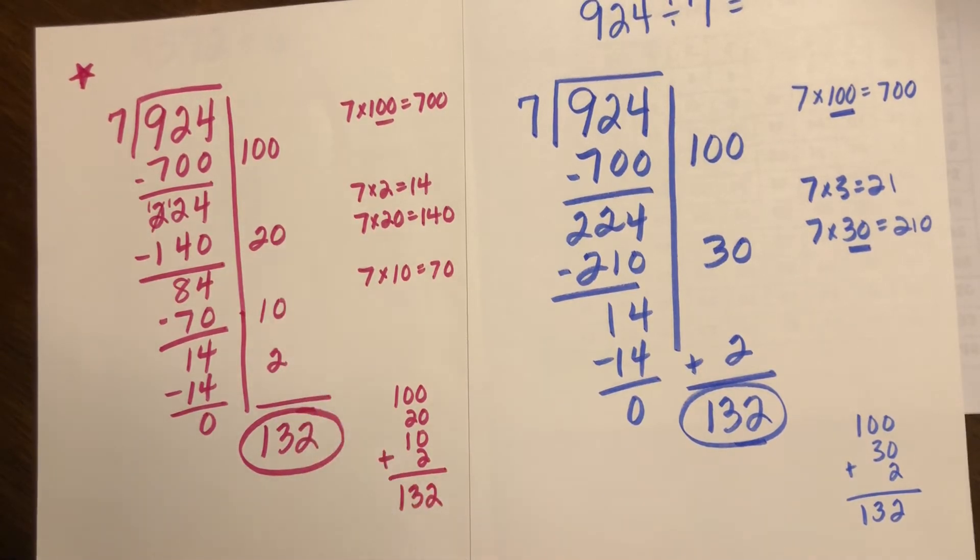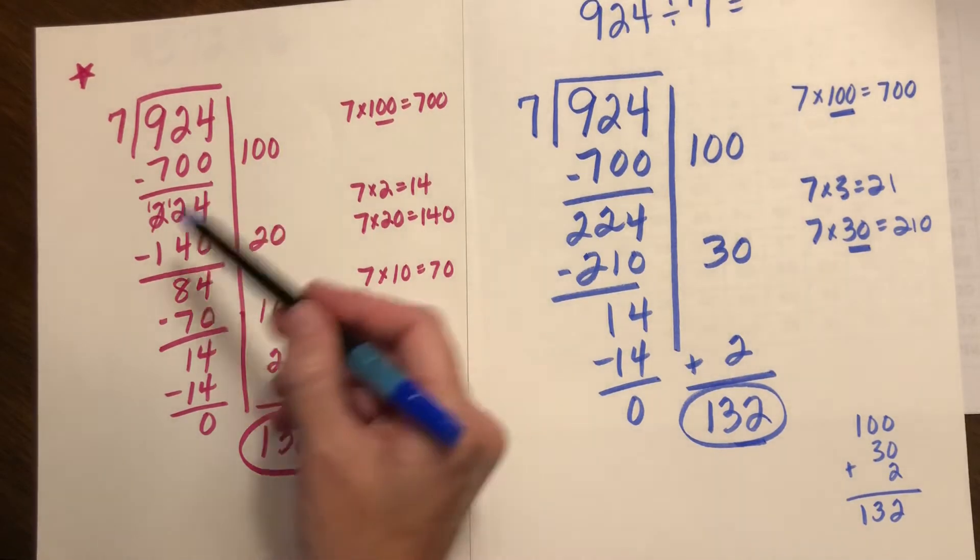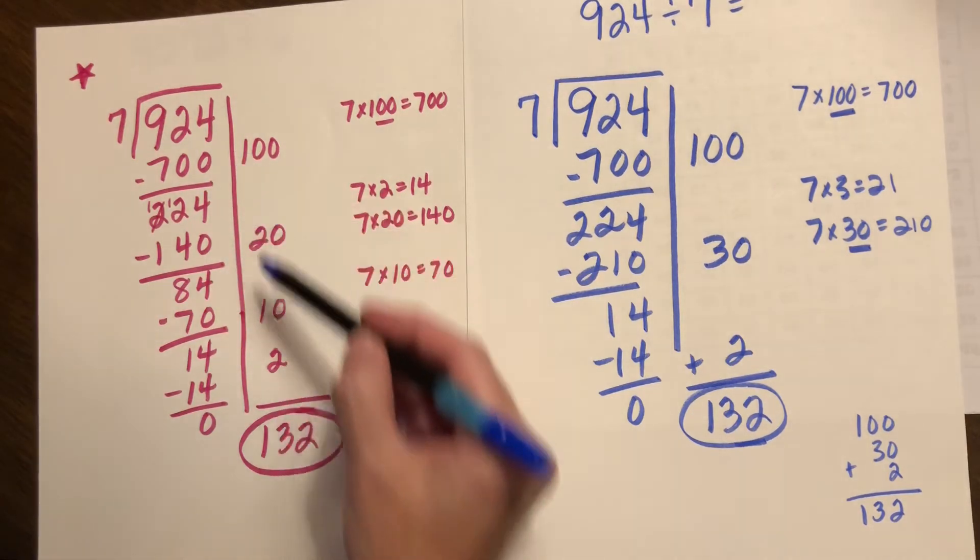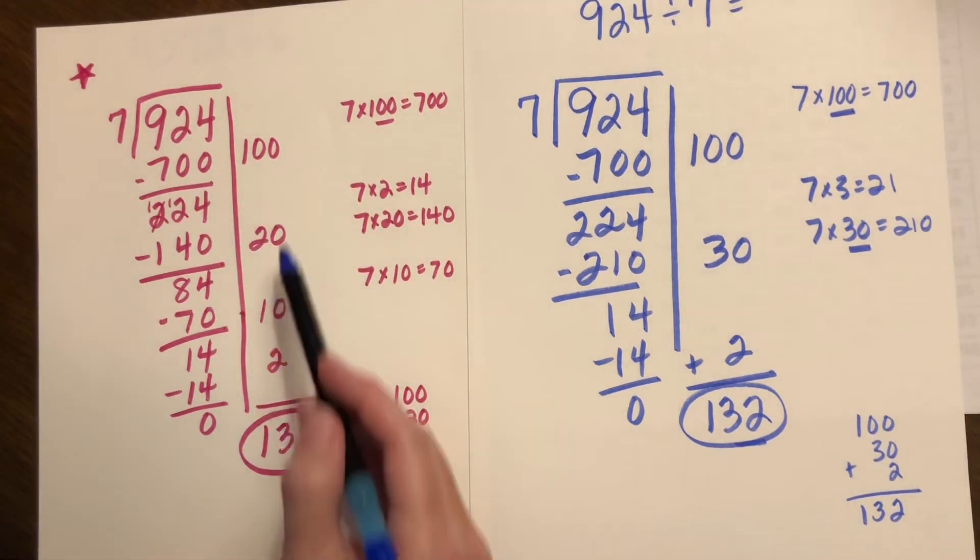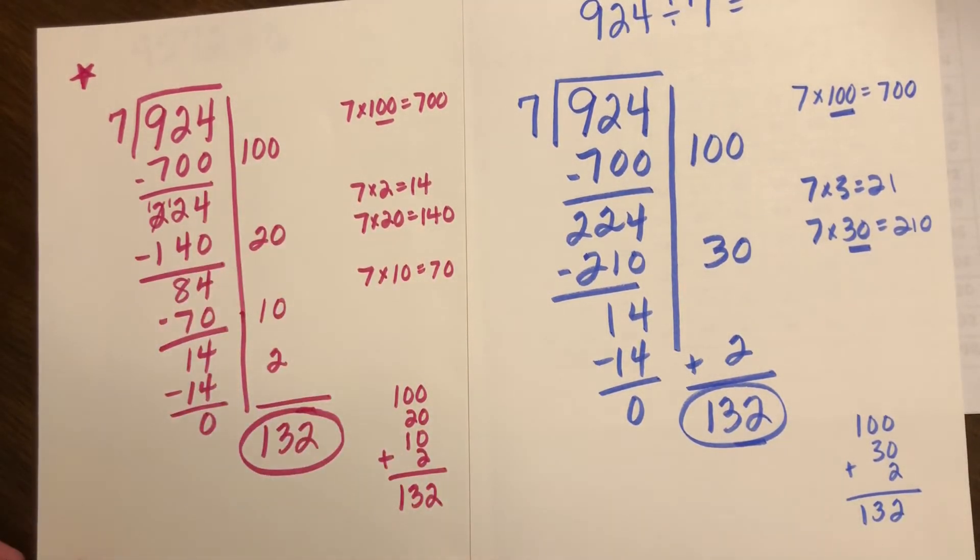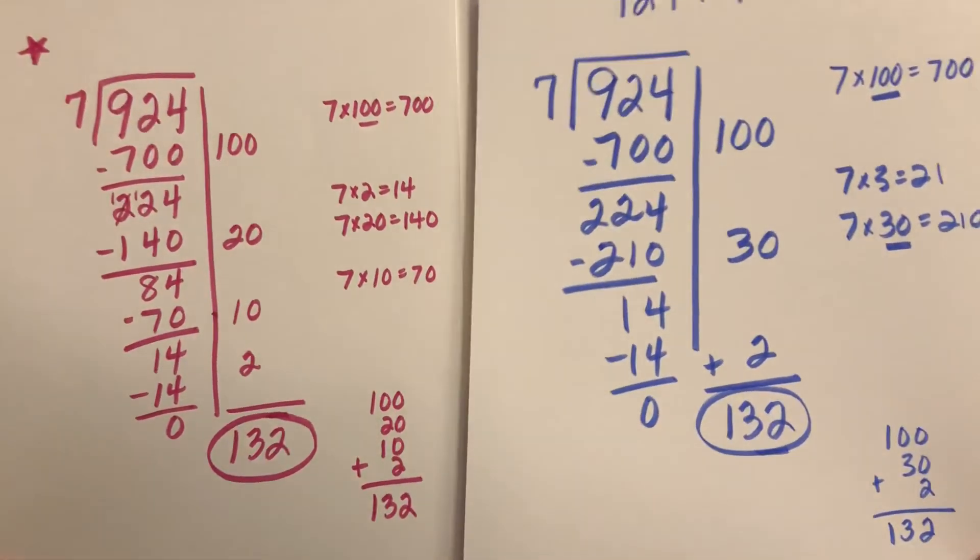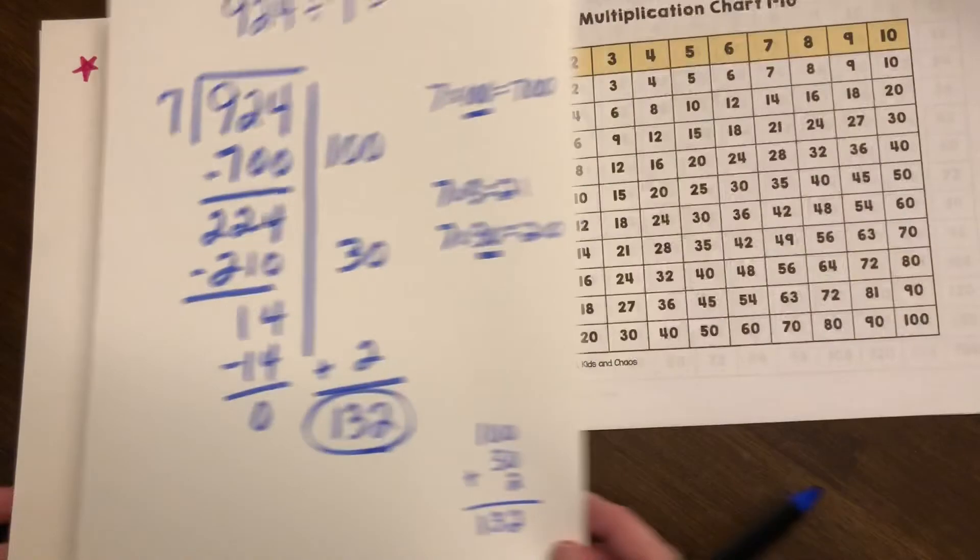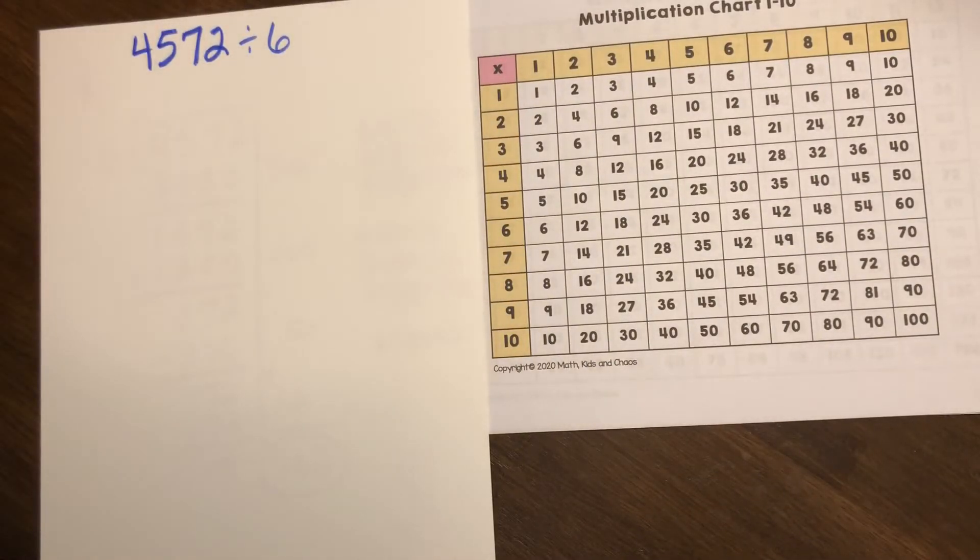This is also friendly for this mathematician. So both of the answers are the same, the process is the same. The friendly numbers have been adjusted to match the facts that are friendly and comfortable for that mathematician.